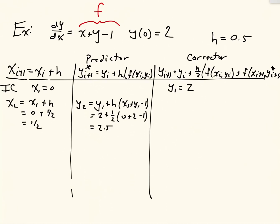Okay, so that's y_2 star. And then over here we're going to compute actual y_2, which is y_1 plus h/2 times x_1 plus y_1 minus 1, plus x_2 plus y_2 star minus 1. And if I plug numbers into that, I get y_1 is 2, h was a half divided by 2 is just a fourth, x_1 is 0, y_1 is 2, x_2 was a half, y_2 star is 2.5 minus 1. If I do the math on that, I get 2.75.